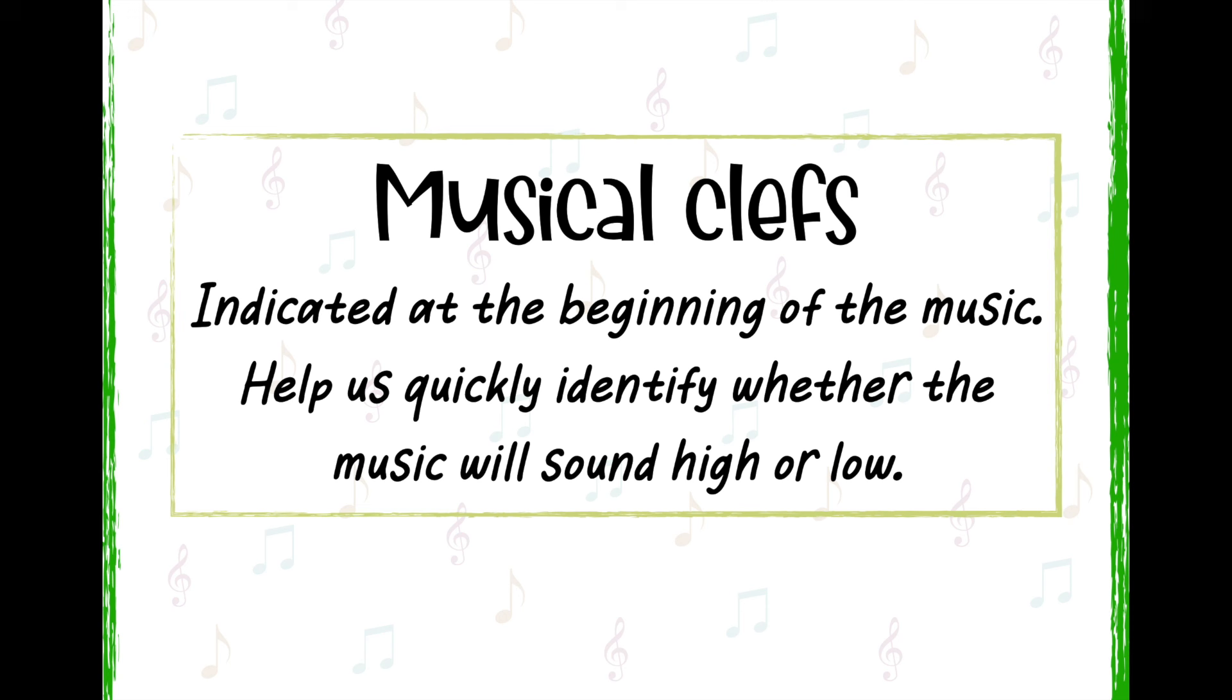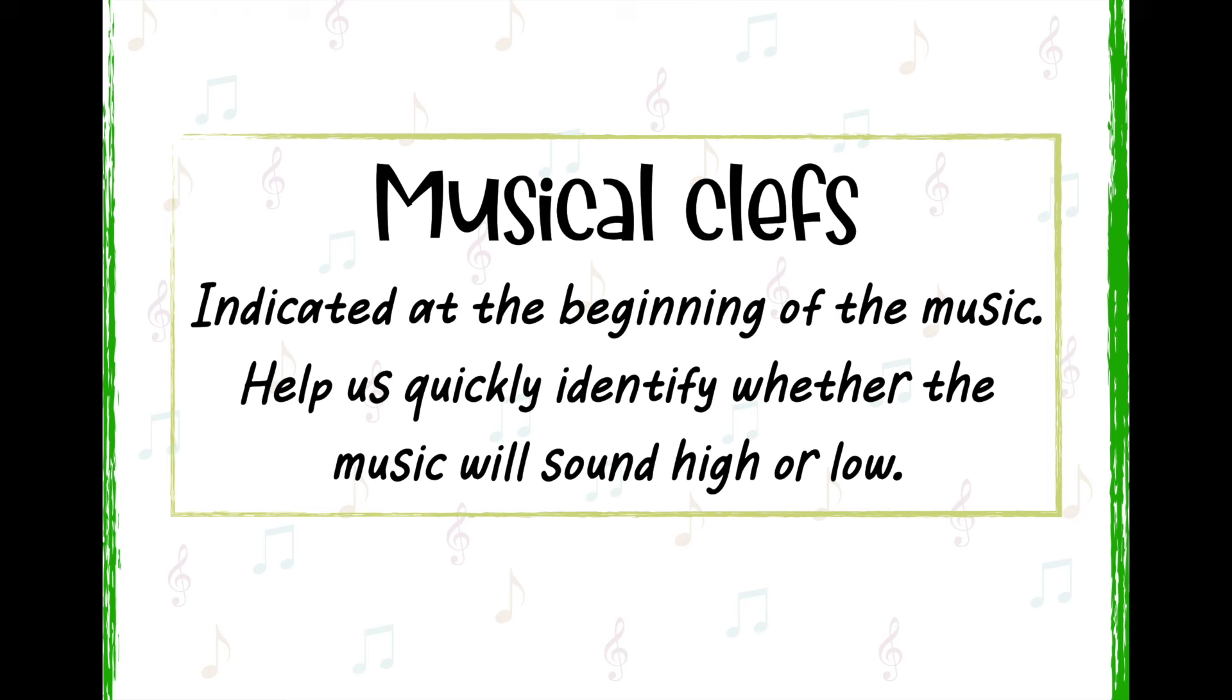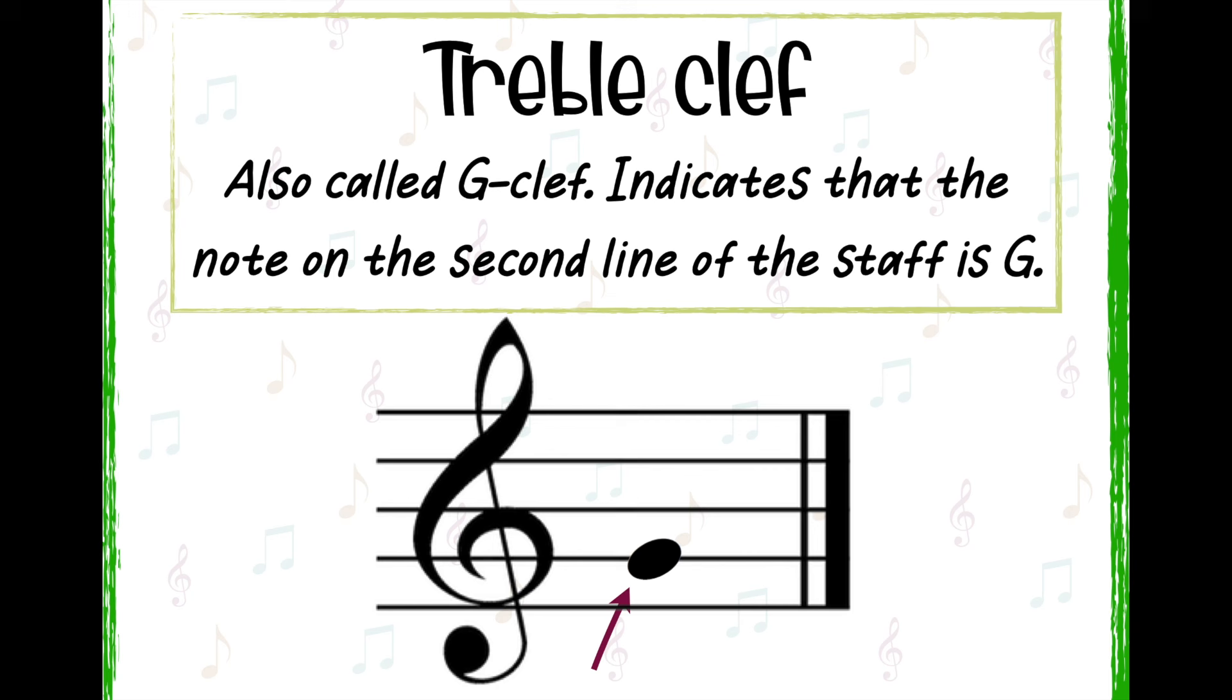Musical clefs are indicated at the beginning of the music and they help us quickly identify whether the music will sound high or low. This is a G-clef, or more commonly known as treble clef. Because the G-clef is placed on the second line on the staff, instruments and voices that use the treble clef will sound higher.